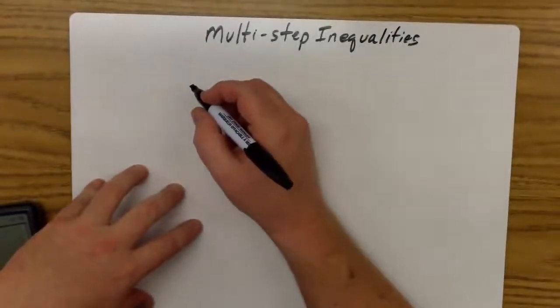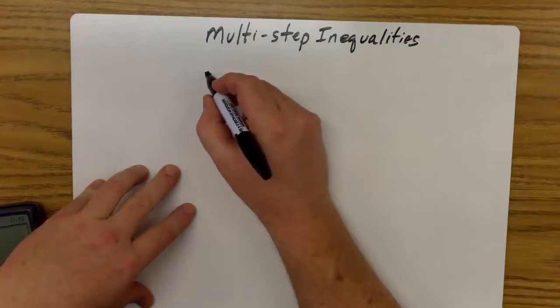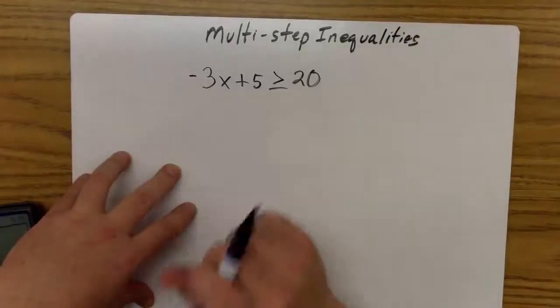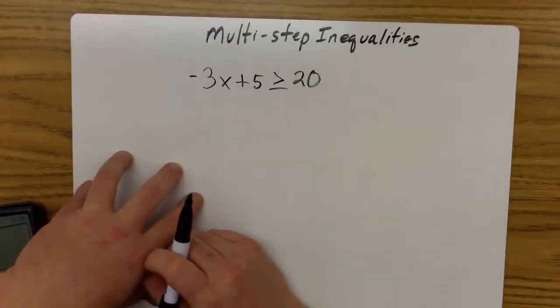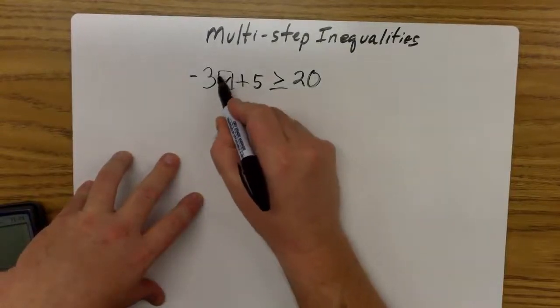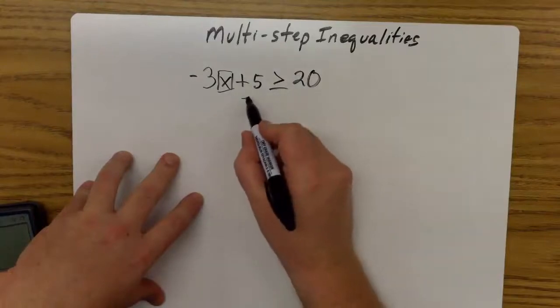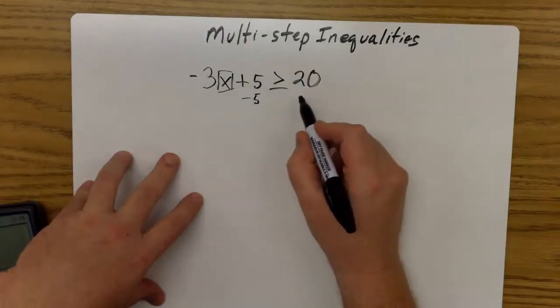We're going to show you how to solve and quickly how to graph in the event that the problem asks you to do that. We're going to start with something simple, solving and graphing -3x + 5 ≥ 20. Before I can graph it, I have to first solve for x, which means I have to isolate x.